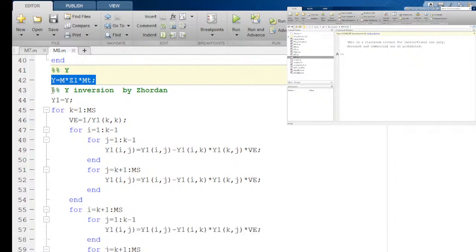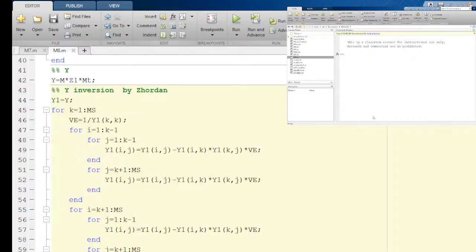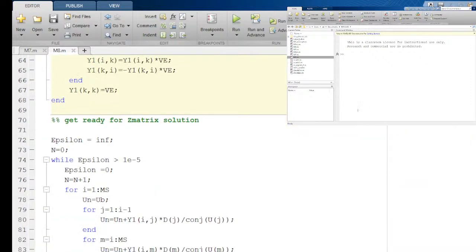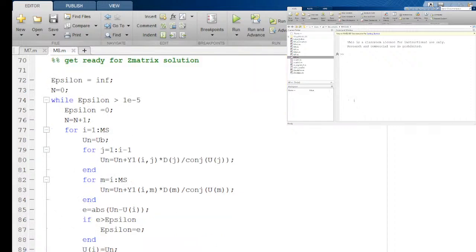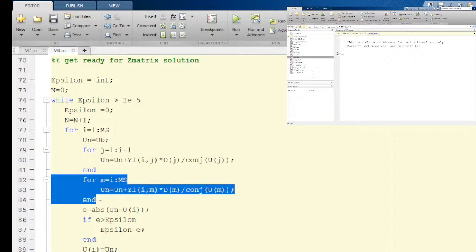Here is nodal admittance matrix: M multiplied by inverse resistance and by M transposed. This part is a matrix inversion by the Jordan excursions. You can use simple built-in function of MATLAB. Actually, this is not needed. You can use built-in function without any problem. And now solution itself. While precision not achieved, take a look. Here is the first sum, here is the second sum, and precision.